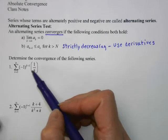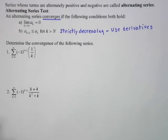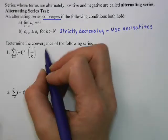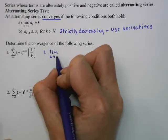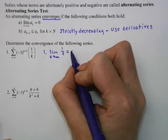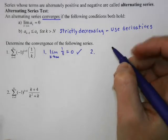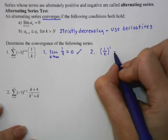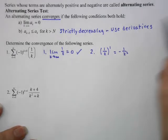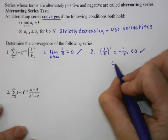So we've got an alternating series. The negative one to the k plus one is going to make it alternate between positive and negative. First, we want to see if the limit is zero: the limit as k goes to infinity of 1/k equals zero — yes, it does. Second, is this strictly decreasing? We take the derivative of 1/k, which is −1/k². No matter what we plug in for k, this is less than zero, so it's always decreasing. Therefore, this series is convergent.